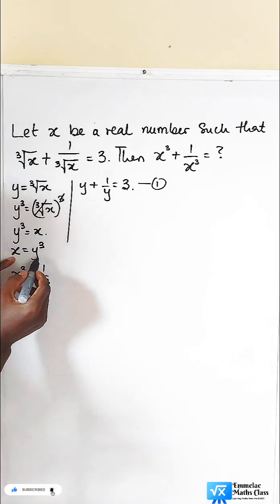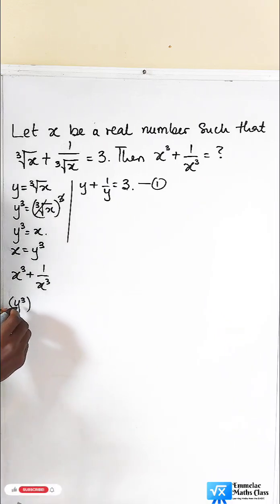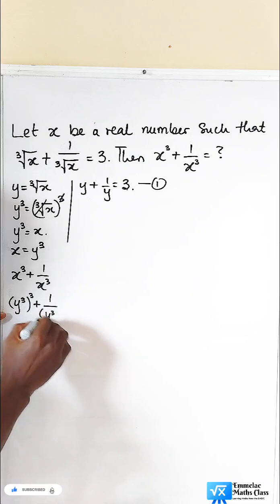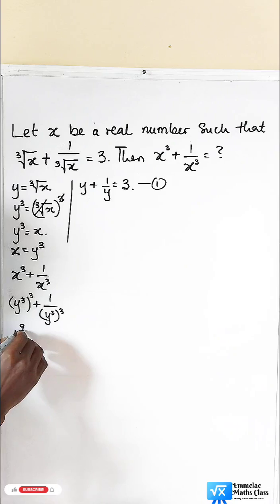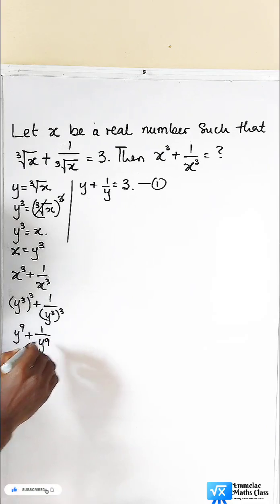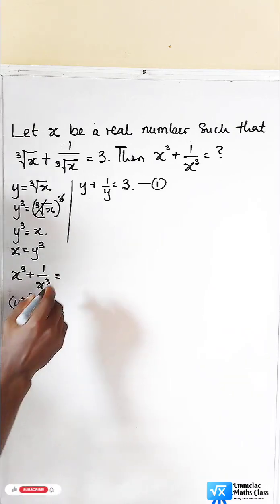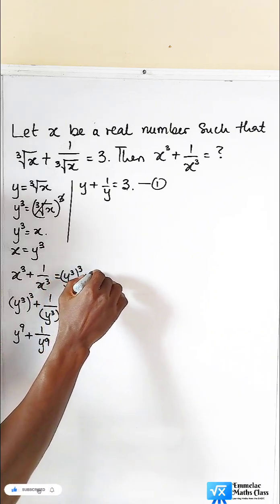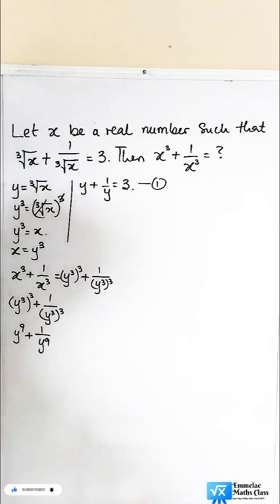Since x itself is y raised to the power of 3, and here we are having x raised to the power of 3, it implies y cube raised to the power of 3, plus 1 all over y cube raised to the power of 3. This gives us y raised to the power of 9 plus 1 over y raised to the power of 9, which can be expressed as y raised to the power of 3 all raised to the power of 3, plus 1 over y raised to the power of 3 all raised to the power of 3.